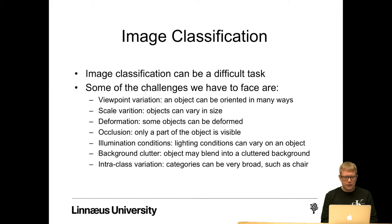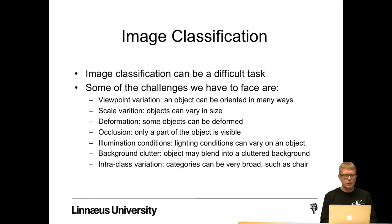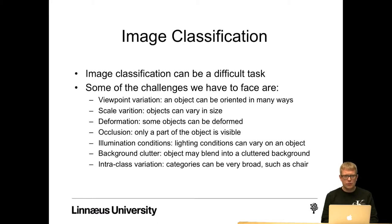Some of the challenges we have to face are viewpoint variation — an object can be oriented in many ways. Scale variation — objects can vary in size. Deformation — some objects can be deformed. Occlusion — only a part of the object is visible. Illumination conditions — we can have very different lighting conditions on an object. Background clutter — some objects may blend into a cluttered background. And intraclass variation — categories can be very broad, such as a chair.